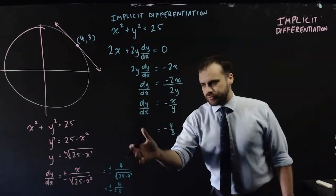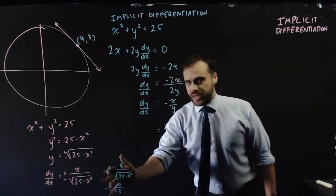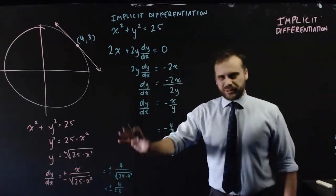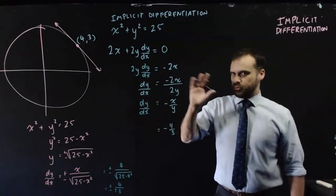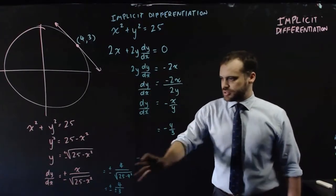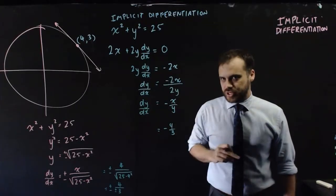What about down there? We get the same sort of result by shoving 4 in for x. But we get these weird pluses and minuses everywhere. What do we do with all of that nonsense? This is it. Implicit differentiation.